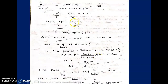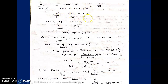Mu/(fck·B·D²) = 252.5×10⁶ / (25×400×400²) = 0.158. Then d'/D = 60/400 = 0.15. So this is again the same chart used in the previous question — we refer SP16 chart for d'/D = 0.15, fy = 415, four-sided distribution.